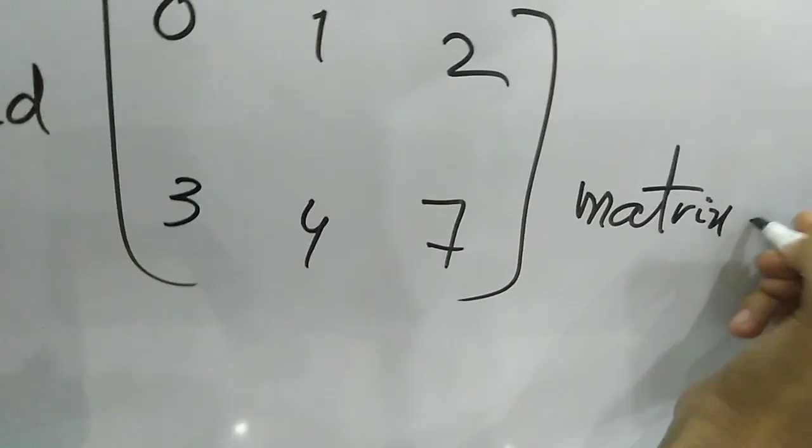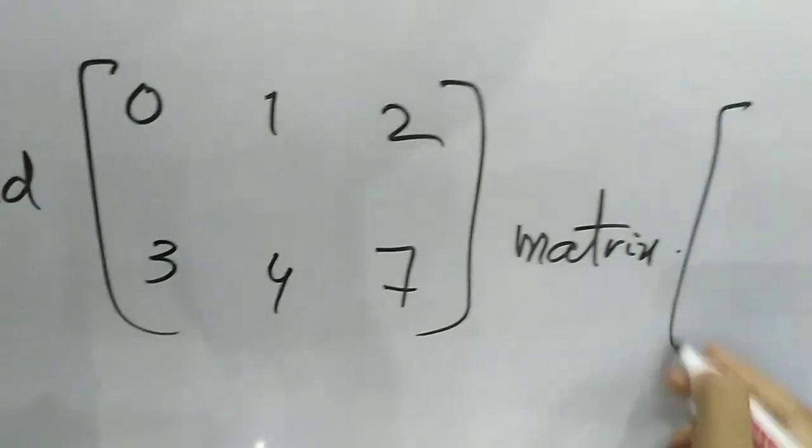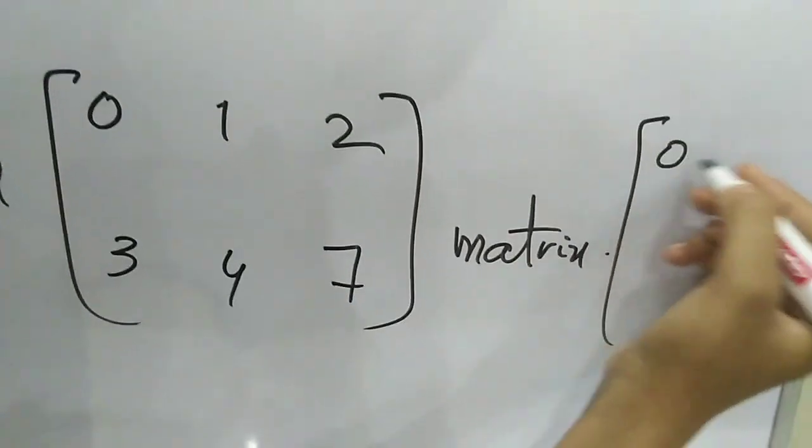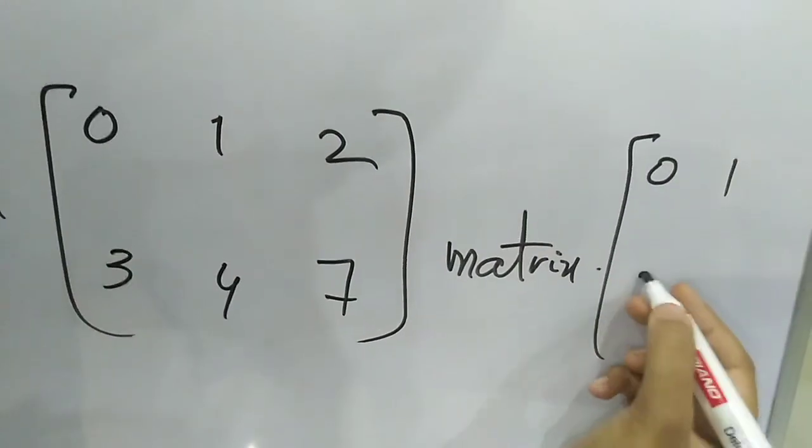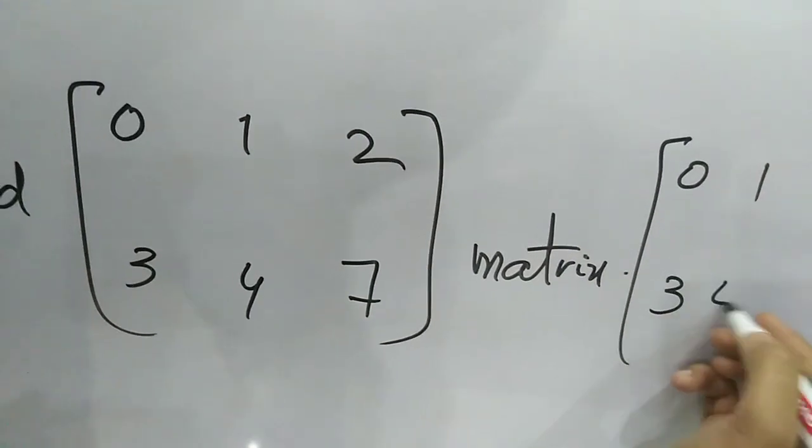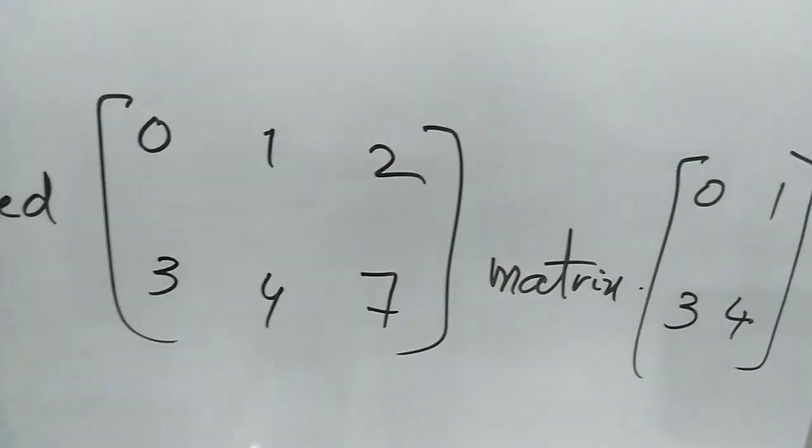Another example: the numbers 0, 1, 3, and 4 arranged in square brackets form a matrix. Matrices are denoted by capital letters such as A, B, C, M, and so on.